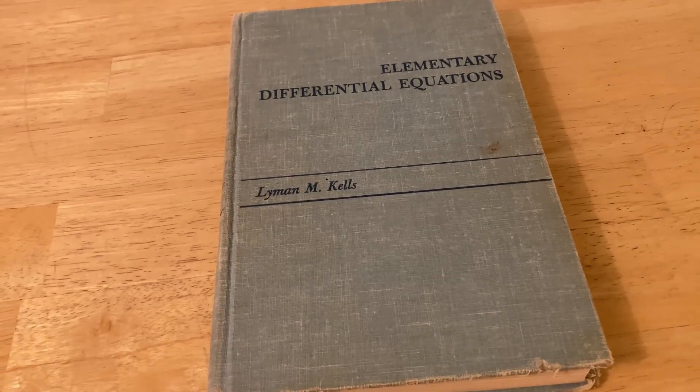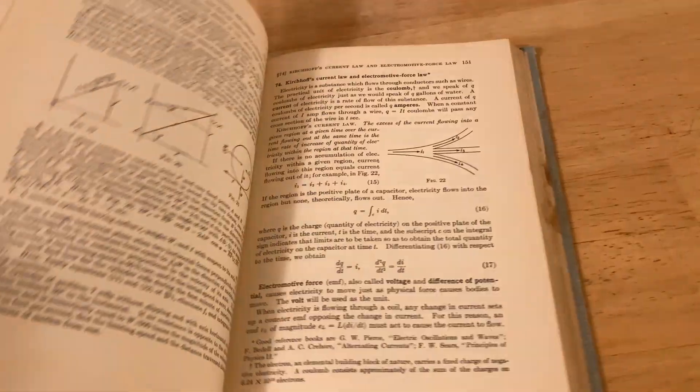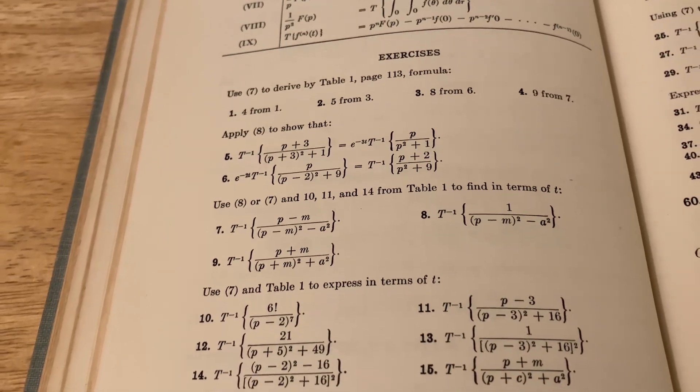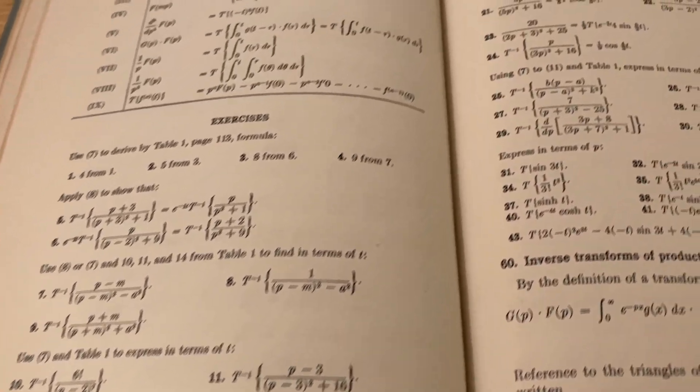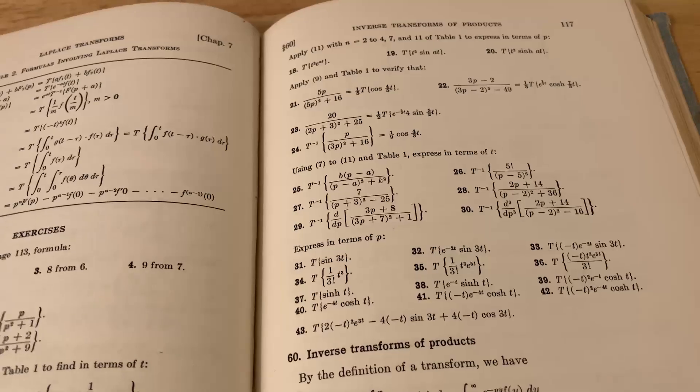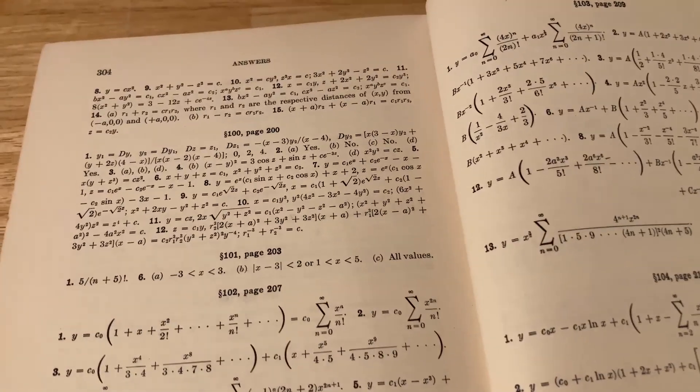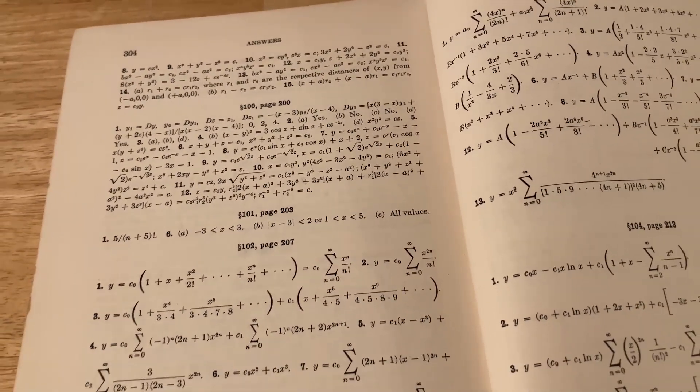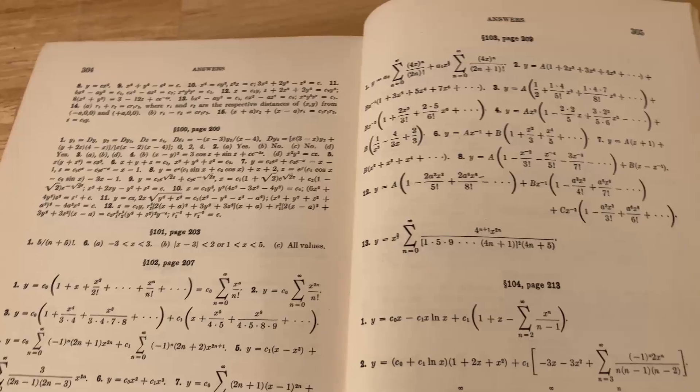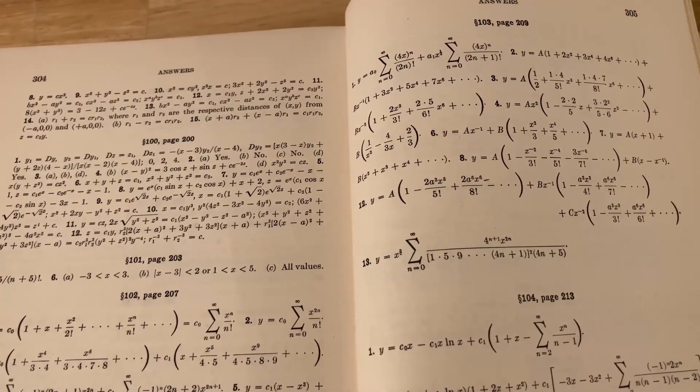So what is the thing that I love the most about this book? For me, it's going to be the exercises. So not only are there tons of exercises, here are the exercises for the section on inverse transforms of products. Look at all of these transforms. Just tons of problems. This is more problems than a lot of modern textbooks. Not only that, you have solutions to almost every single problem in the back of the book. I think that makes it awesome for self-study. And I basically use this as a source of problems.